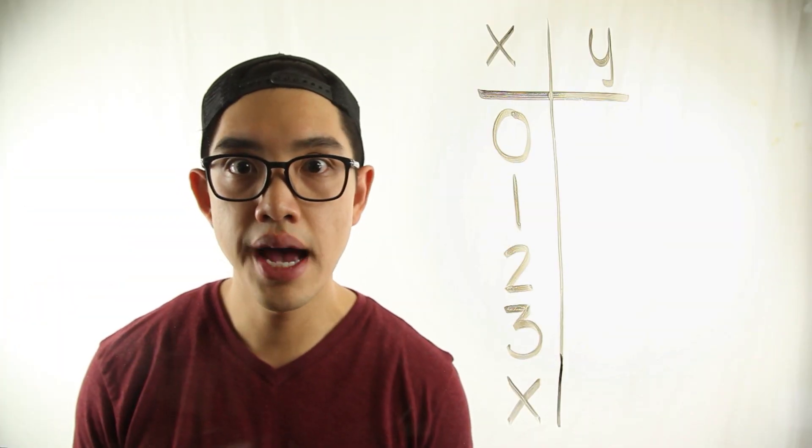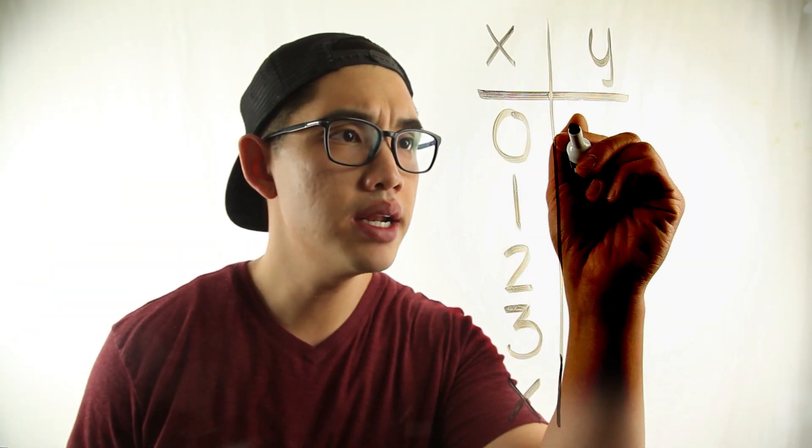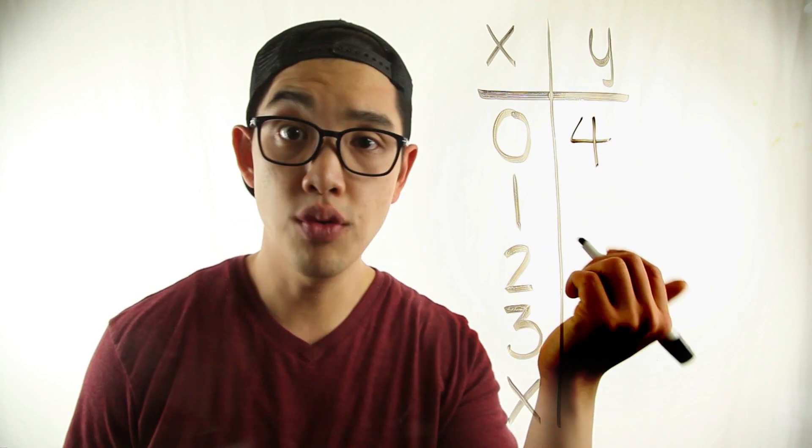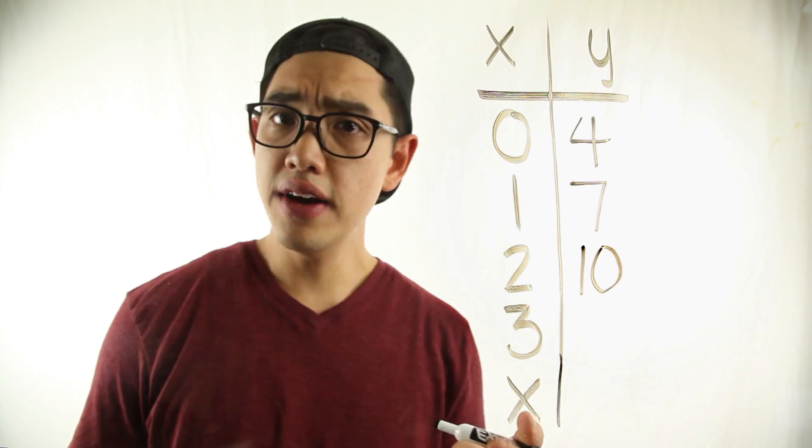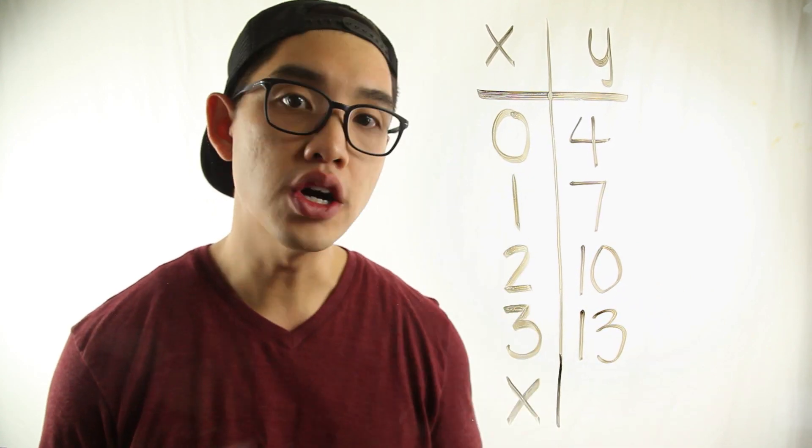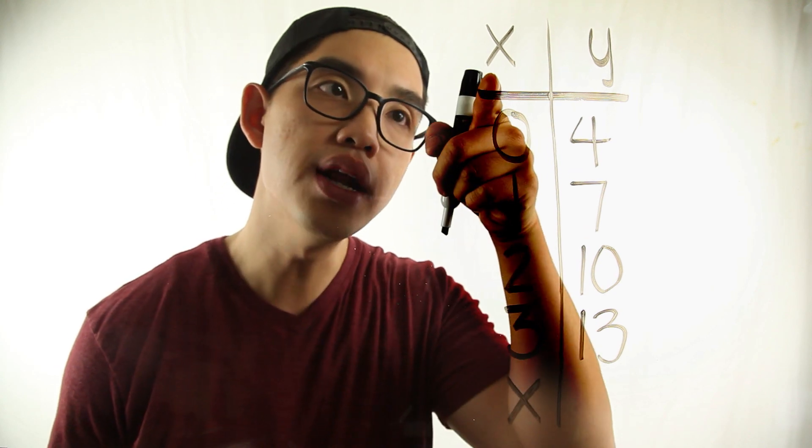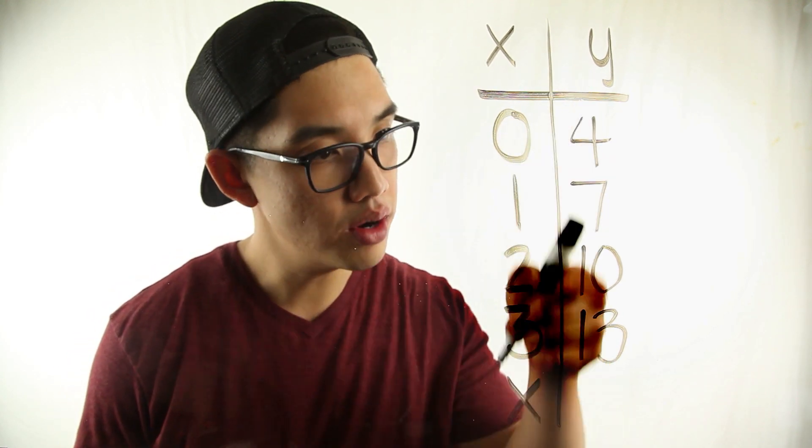Let's do another example. If I have zero I'm gonna get four. If I have one I'm gonna get seven. If I have two I'm gonna get ten. If I have three I'm gonna get thirteen. Pause the video, see if you know what the function rule is. See how the input here became the output here.